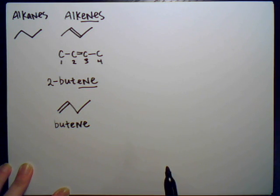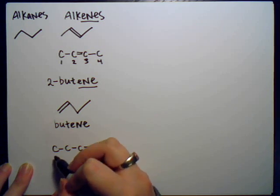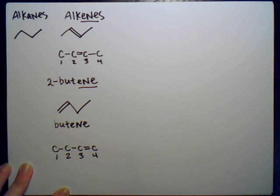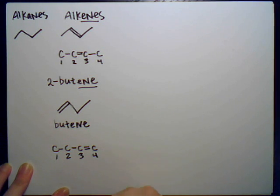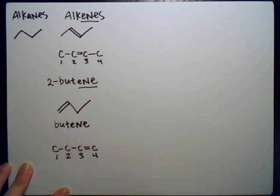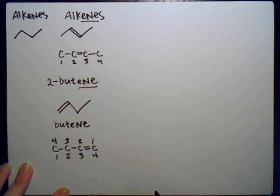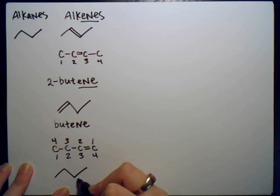If the double bond is between carbons three and four, you might think we'd call it '3-butene,' but that would be incorrect. IUPAC states that we assign the lowest number possible to substituents. If you numbered the chain the other way, that double bond would actually occur on carbon one, so this structure would just be plain 'butene.'